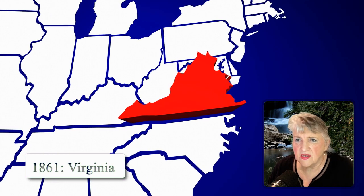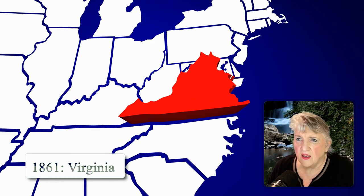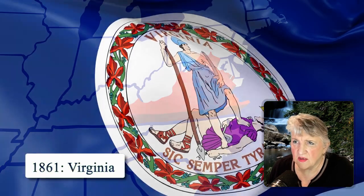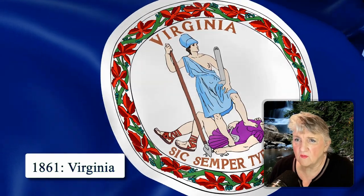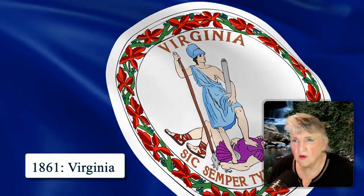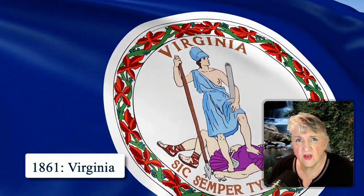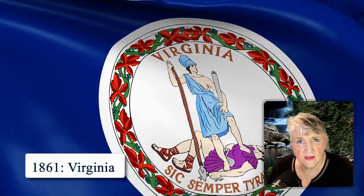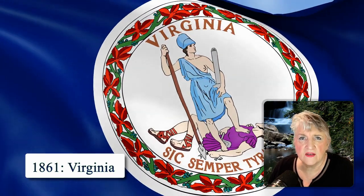The state of Virginia was working on a decision as to whether to remain in the Union or secede, and on April 17th, 1861, Virginia's secession convention voted to secede from the United States, later becoming the eighth state to join the Confederate States of America.